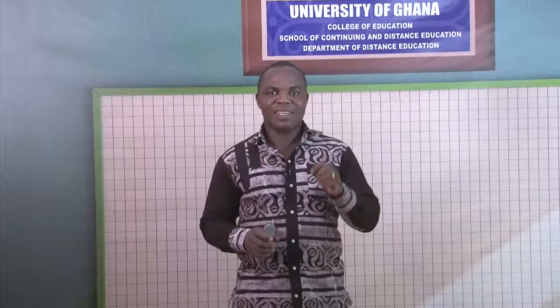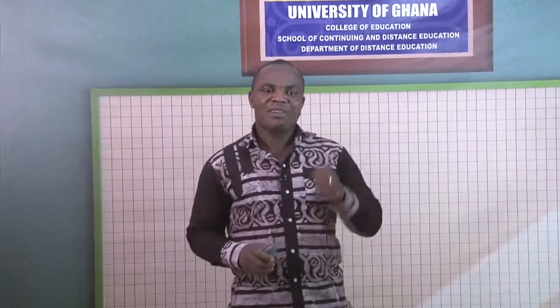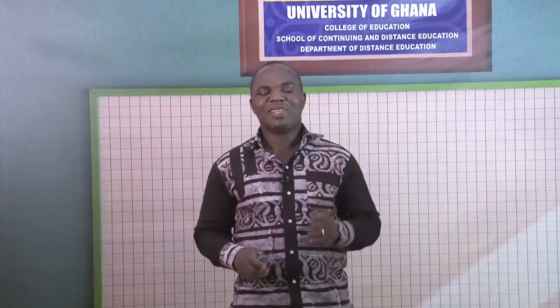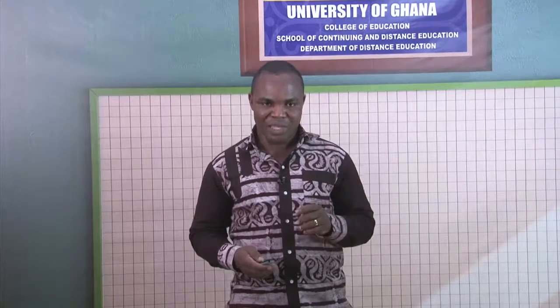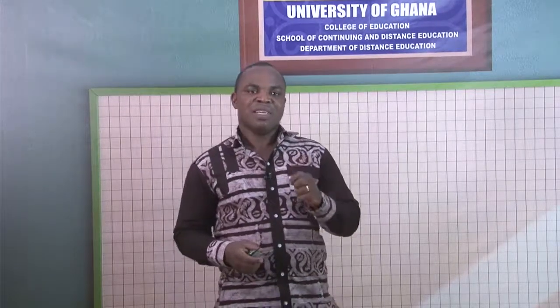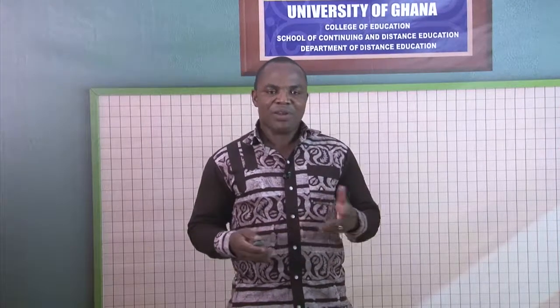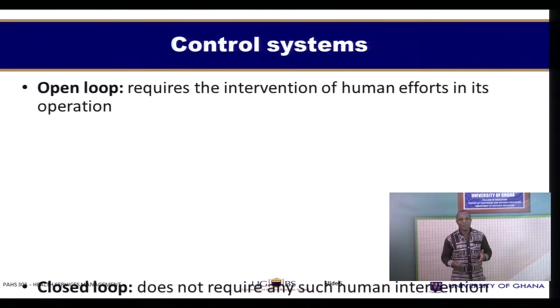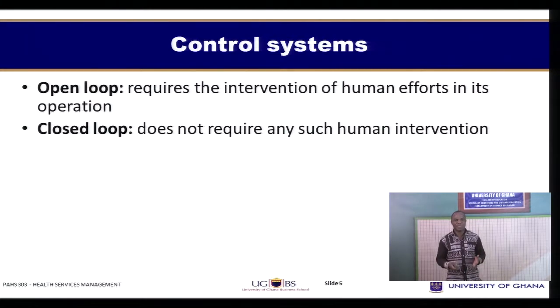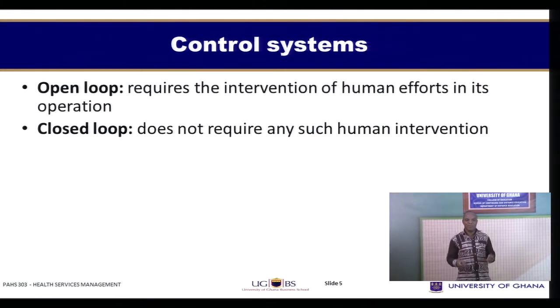Control is very generic in the sense that it is one of the functions of management that ensures that organizations and managers remain on track towards what they actually established to achieve. It is important that control exists in every management setup. Every control system has two major types: what we call the open loop control systems and the closed loop control systems.